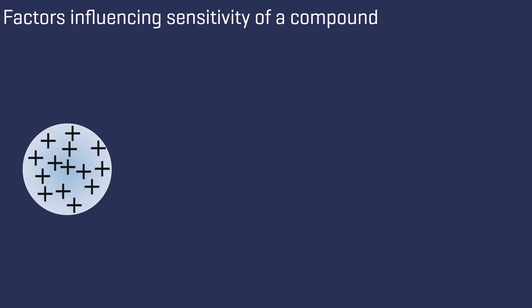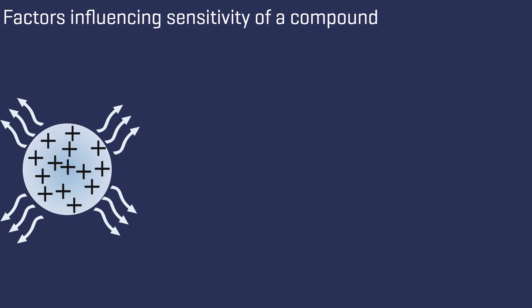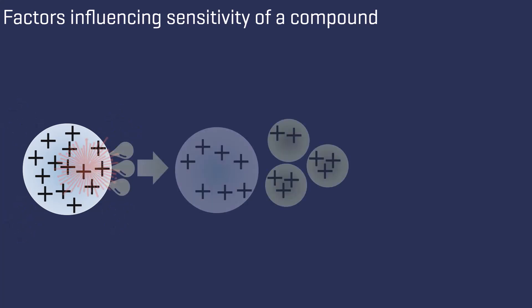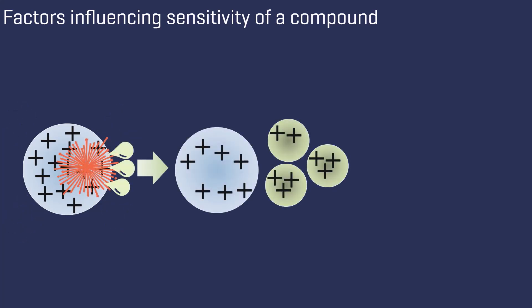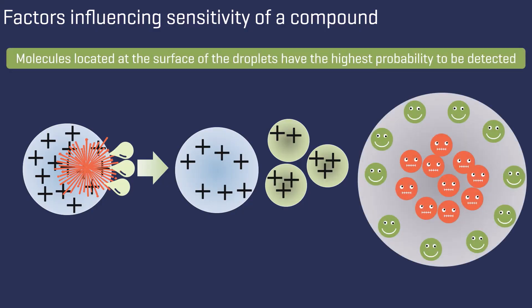Let's briefly recap the process that occurs when the initial droplets shrink and the charge density reaches the Rayleigh limit. At this point, the droplets explode, resulting in the formation of smaller droplets from their surface. This means that molecules located at the surface of the droplets have the highest probability to be detected.